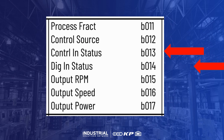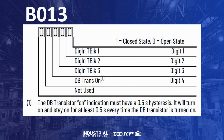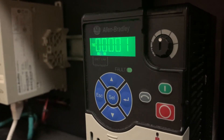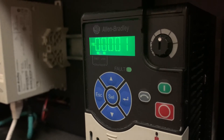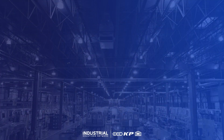Parameters B13 and B14 will display the status of the digital inputs for the drive. Within parameter B13, moving from left to right, the first three digits correspond to terminals 1 through 3 of the drive, respectively. If a 1 is shown, that means the terminal block is receiving a +24 volts DC signal. If a 0 is displayed, then the terminal is not energized.